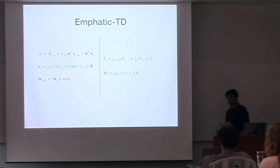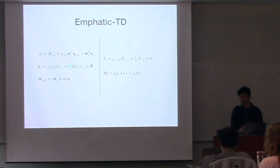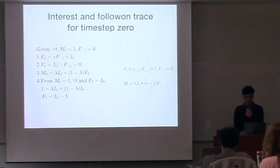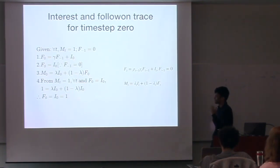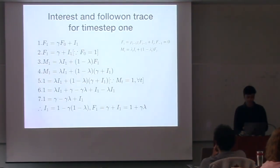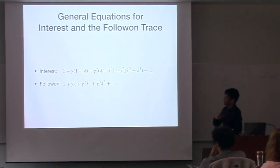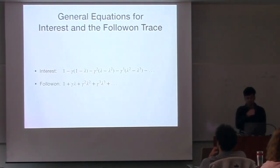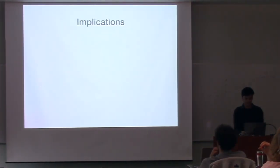Audience: You're turning it around - you're saying I want a certain emphasis, and asking what the interest is? Speaker: Yes, exactly. So assuming the emphasis is one for all time steps, which is equivalent to doing TD lambda, I'm computing the interest which would give emphasis as being one always with any lambda and gamma. Going through the equations, what you end up with is the interest being this particular function and the follow-on being this other function. What this actually says is that TD lambda is equivalent to basically ETD with this particular interest function.